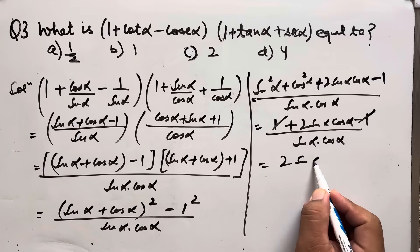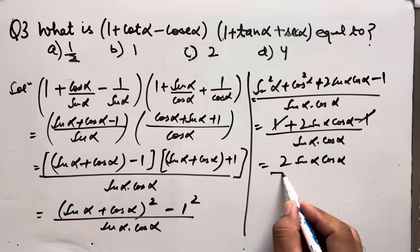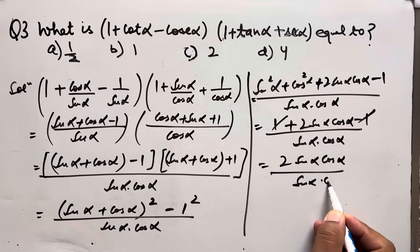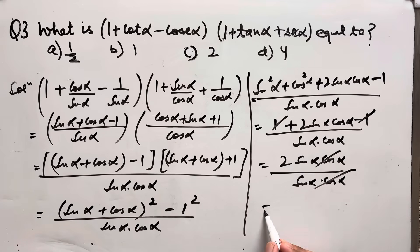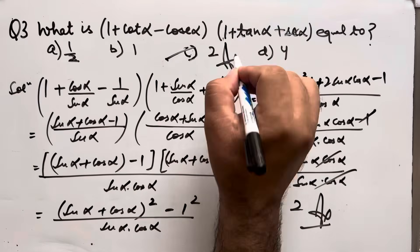We are left with 2sinα·cosα divided by sinα·cosα. This cancels, leaving 2 as our final answer. Option C is correct.